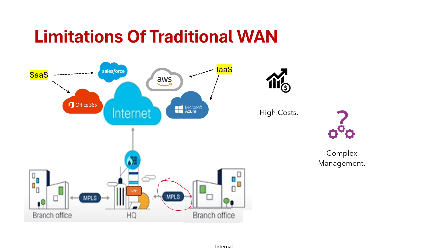There is also complexity of management — manually configuring and managing WAN devices at branch or HQ sites is time-consuming and prone to errors. Implementing network changes such as adding new branches can take weeks or even months, and deploying private MPLS circuits is a slow and tedious process, often delaying the rollout of new remote sites.